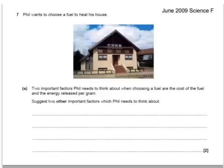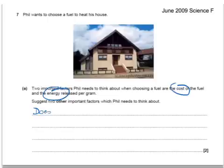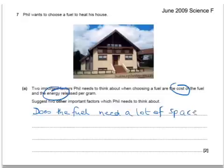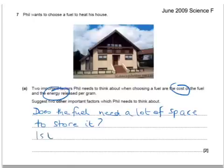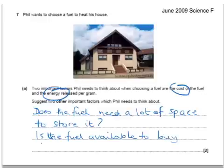Here's a past exam question. Phil wants to choose a fuel to heat his house. Two important factors Phil needs to think about when choosing a fuel are the cost of the fuel and the energy release per gram. Give two other important factors which Phil needs to think about. We might consider storage — does the fuel need a lot of space to store it? And we might also consider availability — is the fuel available to buy locally?